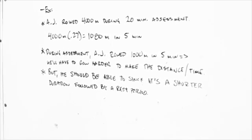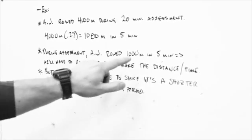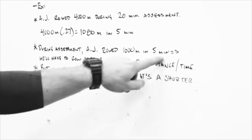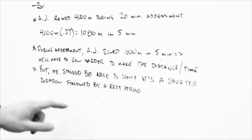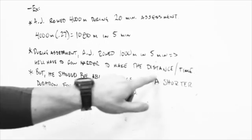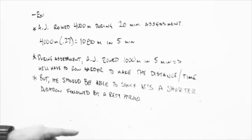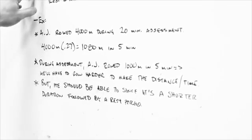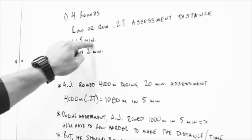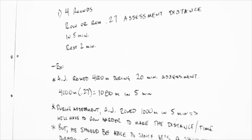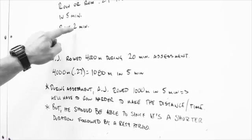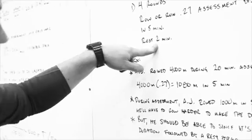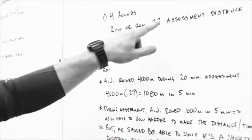So how is this a higher intensity? Well, because during his assessment, AJ rode 1,000 meters in five minutes. Now he's got to row 1,080 in five minutes. So he'll have to row harder in order to make his distance per time. But he should be able to do that because he's got a shorter duration. He's not going for 20 minutes. He's only going for five minutes. And then he's going to get a rest period as well. So he should be able to recover some, not totally, but some during this two minutes and then repeat that effort.